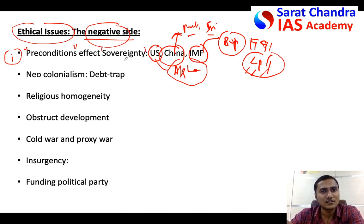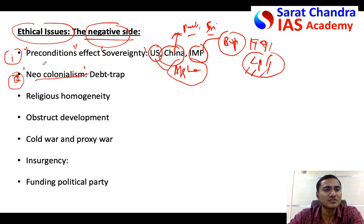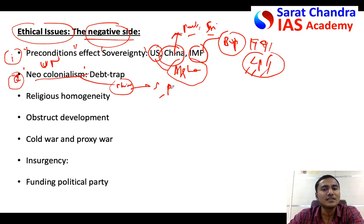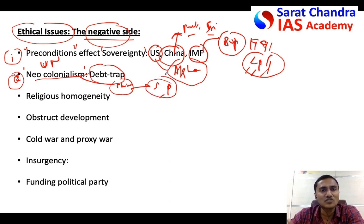Another aspect is neocolonialism. Since colonialism is no longer accepted under the United Nations, what countries like China are doing is funding Sri Lanka and Pakistan, giving them heavy loans and bringing them into a debt trap, so those countries have no option but to follow what China dictates in their local society, politics, or economy.